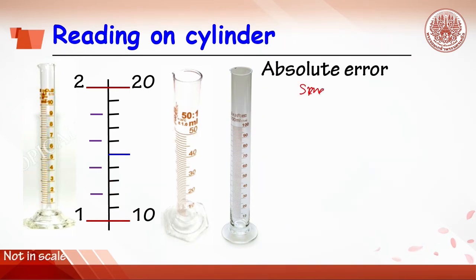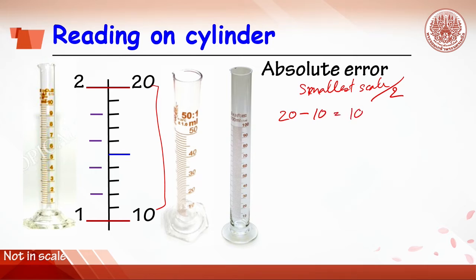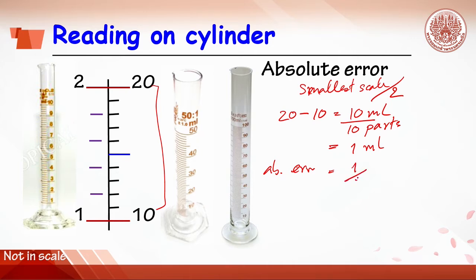The quality of the measuring device is determined by absolute error, calculated as half of the smallest scale. The cylinder goes from 20 to 10, which is 10 mL, divided into 10 parts, so the smallest scale is 1 mL. The absolute error is 1 divided by 2, which is 0.5 mL, meaning the cylinder can report up to 1 decimal place.